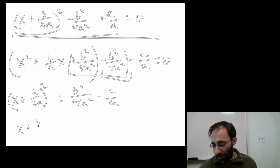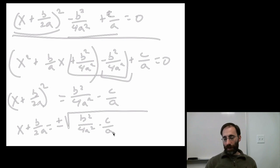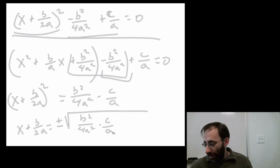So now we have x plus b over 2a equals now it's plus or minus because the square root could be either plus or minus, remember, plus or minus the square root of this thing. Okay. So, so far, so good.